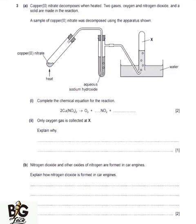Roman numeral one is saying complete the chemical equation for the reaction. We have copper 2 nitrate being decomposed to form oxygen plus nitrogen dioxide plus the last product that we don't know. The last product is going to be copper 2 oxide.